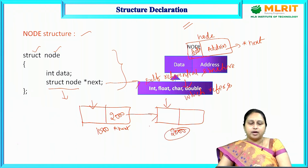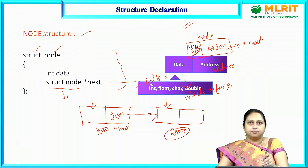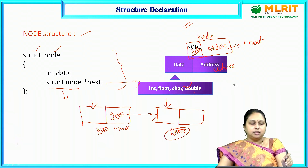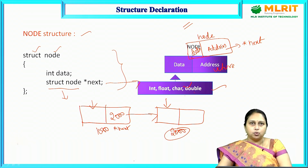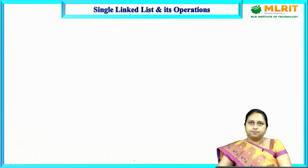The data type for the data member can be any of: int, float, char, or double — different data types can be used for storing the data in your nodes.